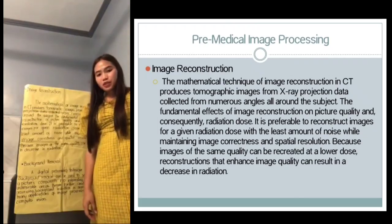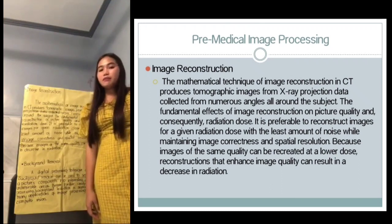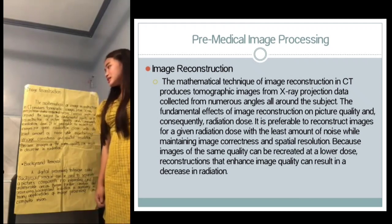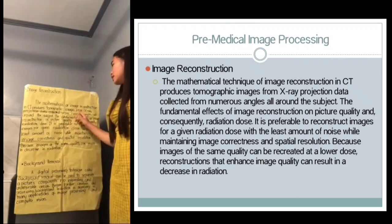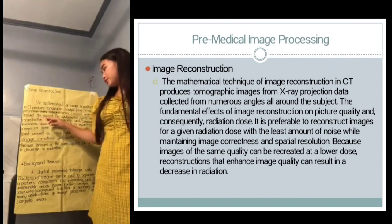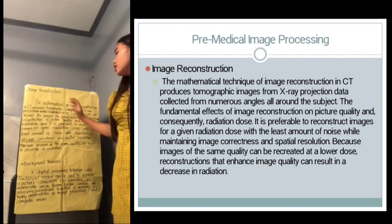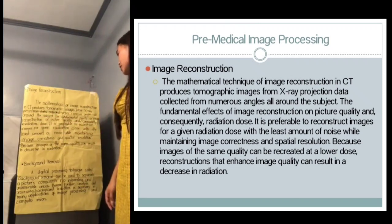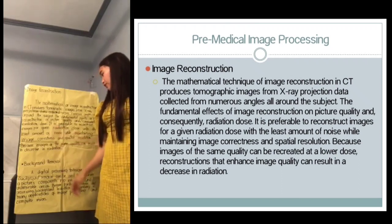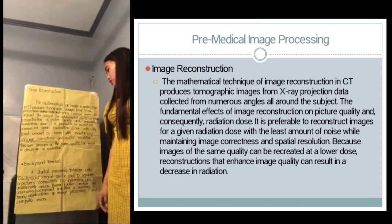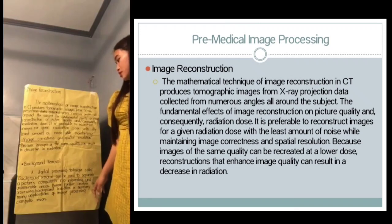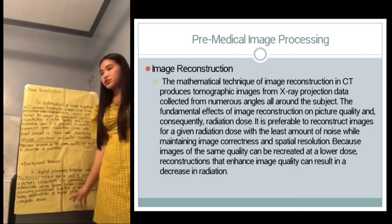Good day, everyone. My name is Emergia Molan and my topic is all about image reconstruction. Image reconstruction is the mathematical process of reconstructing images, and CT produces tomographic images from X-ray projections and data collected from numerous angles all around the subject. The fundamental effects of image reconstruction on picture quality and consequently radiation dose mean it is preferable to reconstruct images for a given radiation dose with the least amount of noise while maintaining image correctness and spatial resolution, because images of the same quality can result in a decrease in radiation.